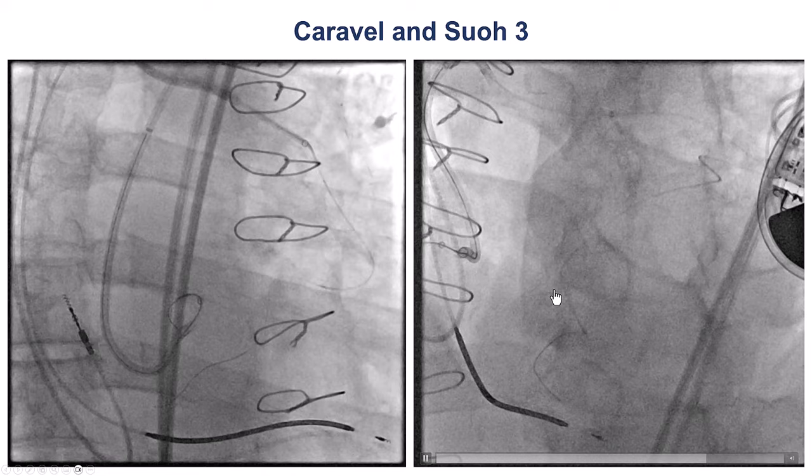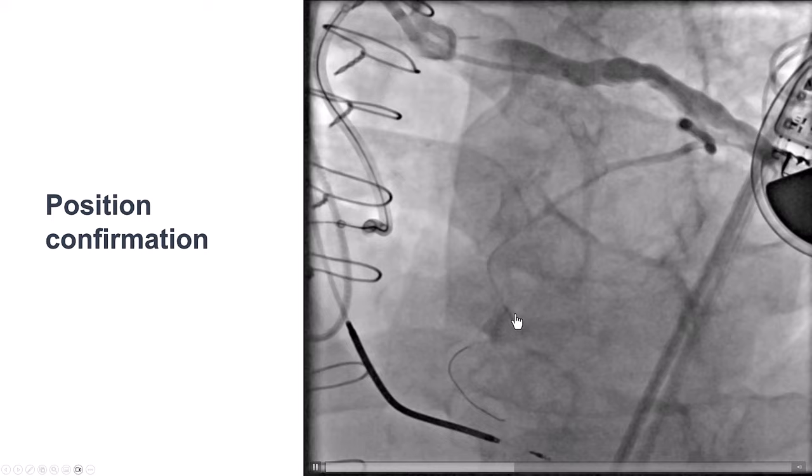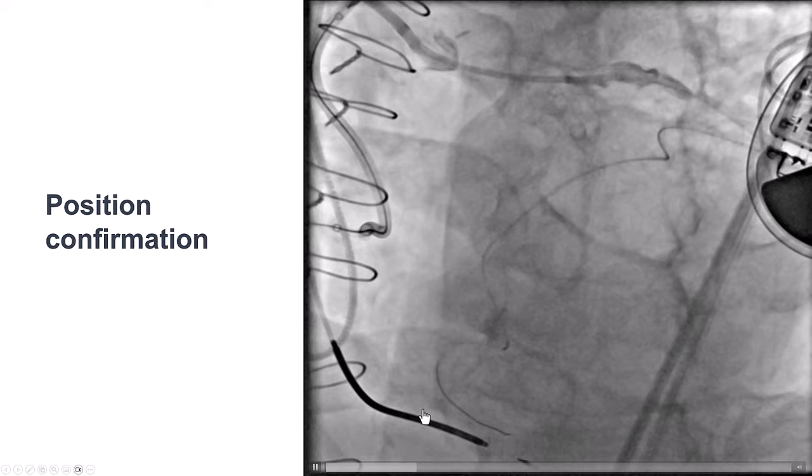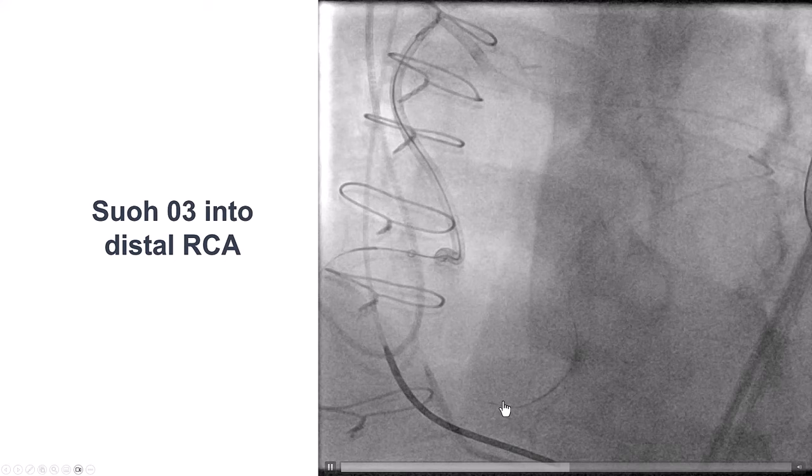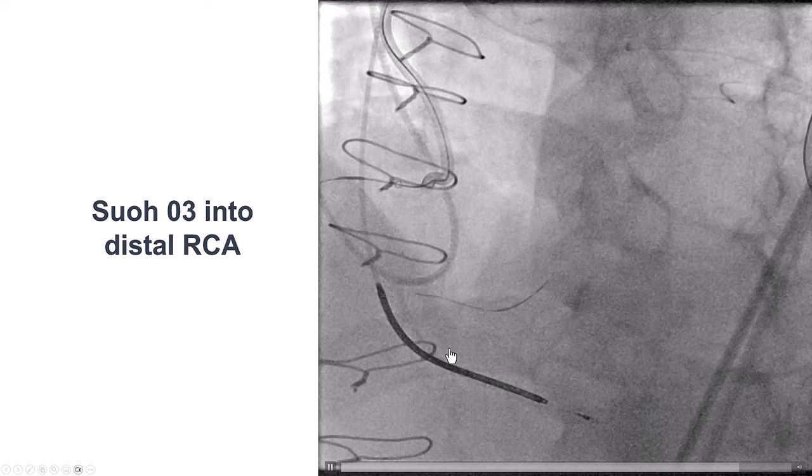By doing an injection, we were able to visualize the distal vessel. We are indeed into the right posterolateral, coming to the PDA. We then tried to advance the SUO-03 into the distal right coronary artery, and we were able to make some progress.